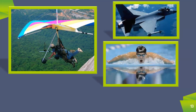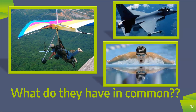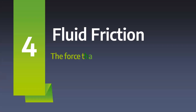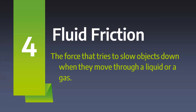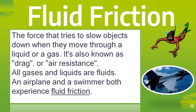In another example, the man is flying in air, an aeroplane is flying in air, and a person is swimming in water. What is common in them? Air and water can be combinedly called as fluid. When solid objects are moving in fluid, they will also experience some opposite resistive force — when objects are moving through a liquid or a gas, this resistance tries to slow them down. This type of resistive force can be called as fluid friction. Fluid friction is the force that tries to slow objects down when they move through a liquid or a gas — it can otherwise be called as drag or air resistance. An aeroplane and a swimmer both will be experiencing fluid friction.